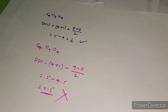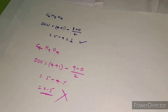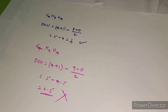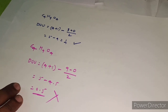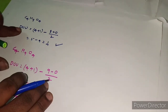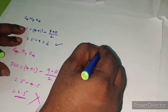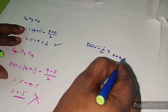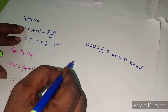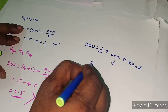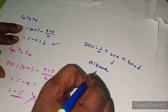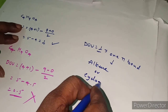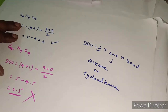You may get exam questions asking which compound can exist as an organic molecule. Just calculate the degree of unsaturation: if it is a whole number, the molecule can exist; if it is a fraction, it cannot. Additionally, if the degree of unsaturation equals 1, it represents the presence of one pi bond, meaning the compound can exist as an alkene or a cycloalkane.